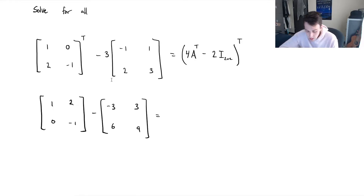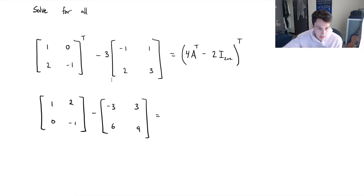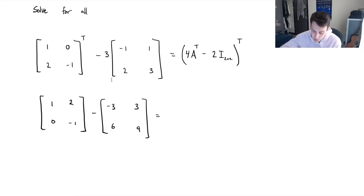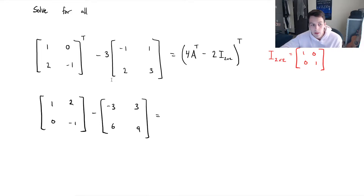Next, we've got the right-hand side, and this side looks a little bit more confusing. We're taking the transpose of a subtraction of two matrices. So we've got 4 times A transpose — which is what we're trying to solve for — and minus 2 times the identity matrix. The identity matrix, at least for a 2 by 2, has diagonal entries of 1 and all other entries are 0.